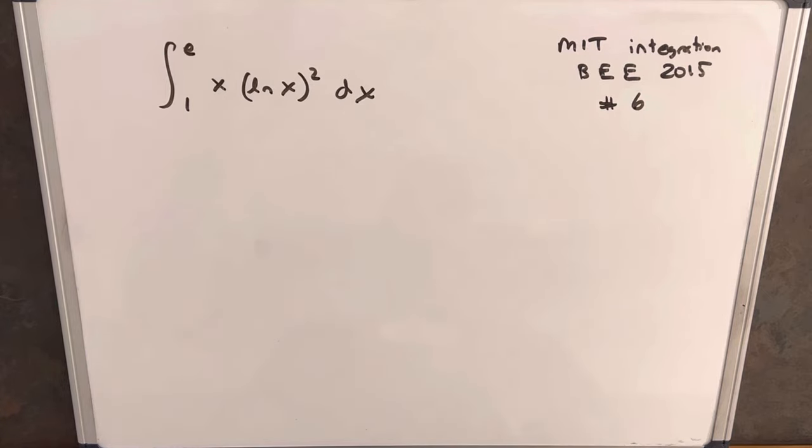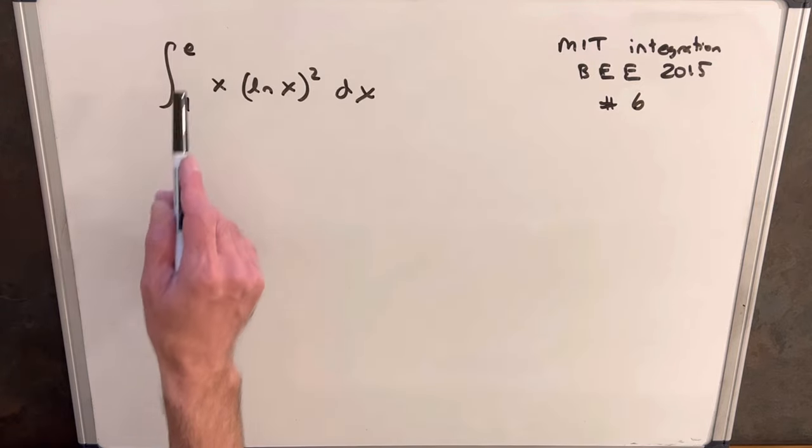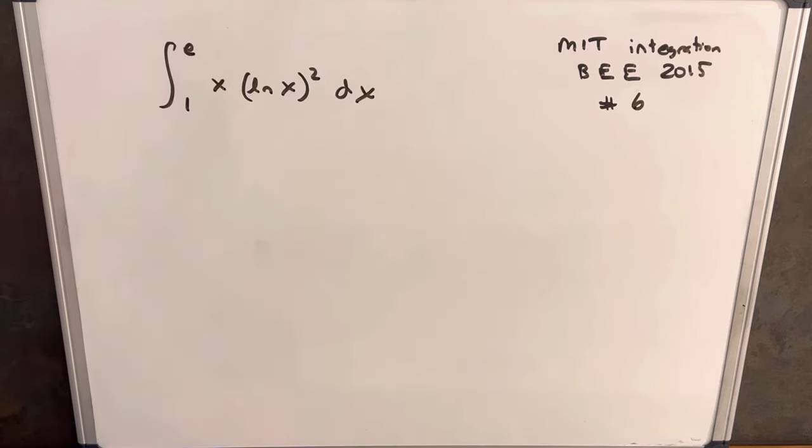Hi, we have an integral on the board from the MIT Integration B 2015. This is question number six on the qualifying exam. We have the definite integral from 1 to e of x times ln x squared dx.